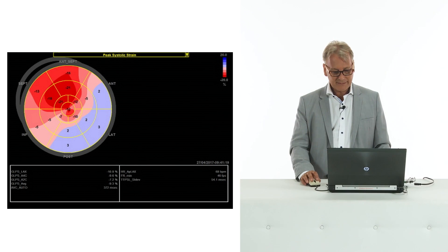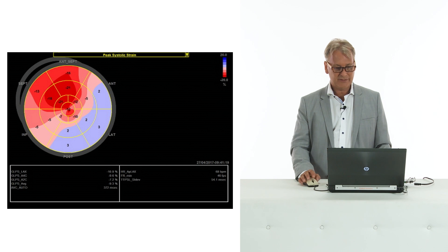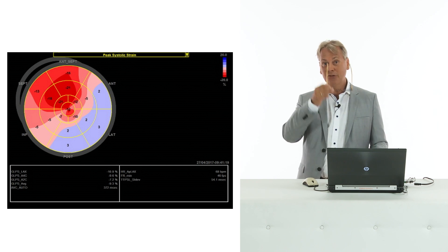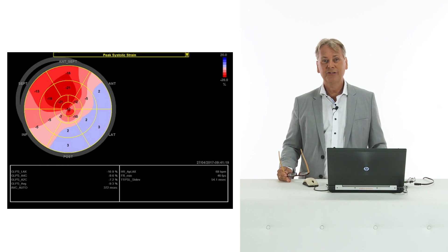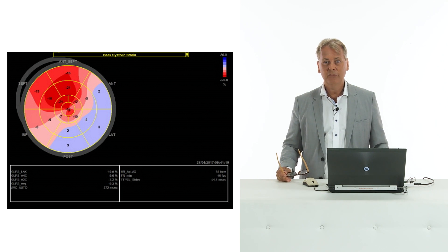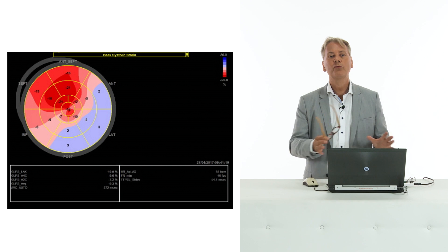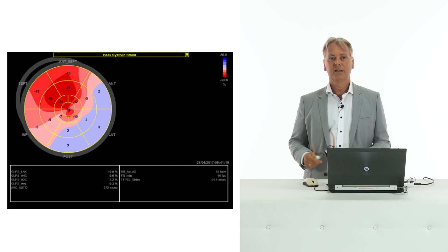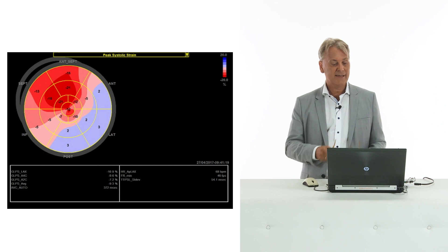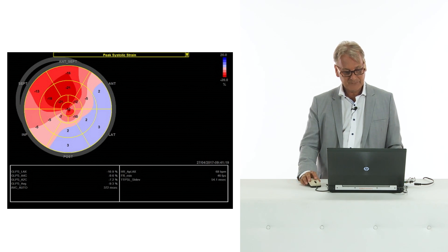This clearly indicates the presence of viability. Here is the strain analysis of our patient. Did you expect such a poor strain, which is so regionally distributed as in this bullseye display?